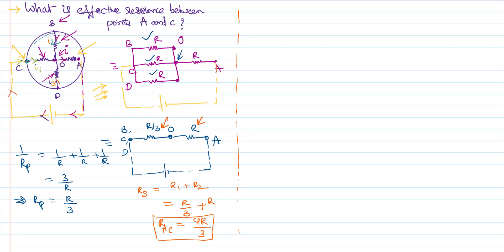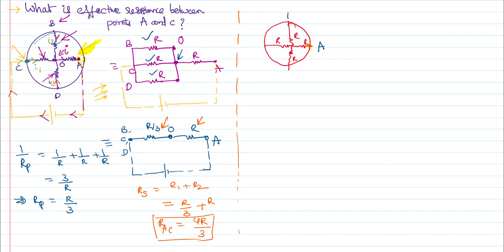Now I want to add one more point. Consider a slightly different problem: say this is that circle, and if all four resistors are connected everywhere. At point A, it is now connected to the circle, whereas in the previous problem it was not. If that is the case, how do you solve the problem? The difference is: here it is connected, here it is not. This is point O. You cannot calculate resistance between C and A because C and A are connected to the same point.